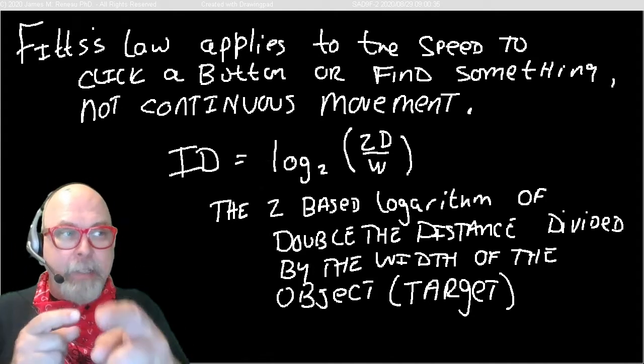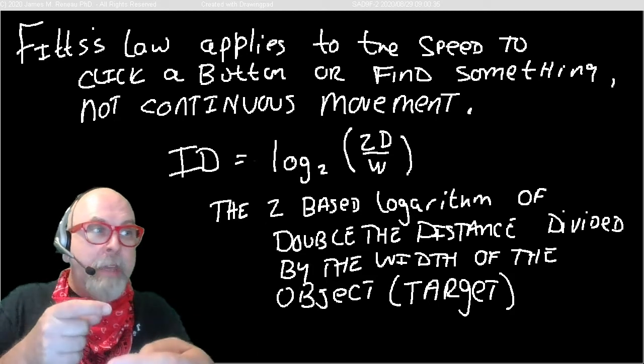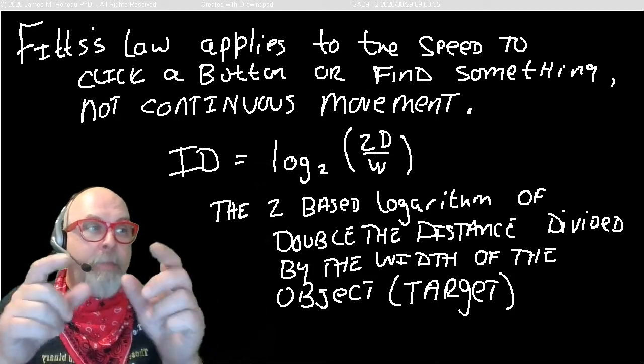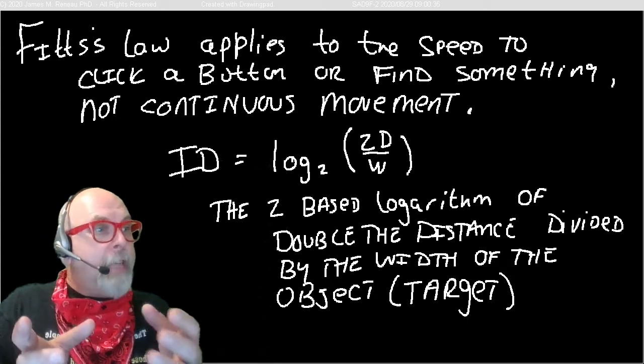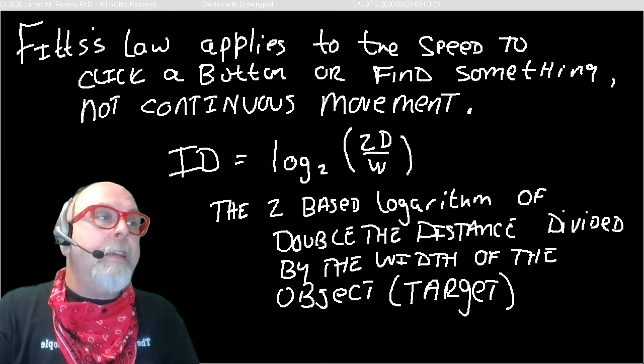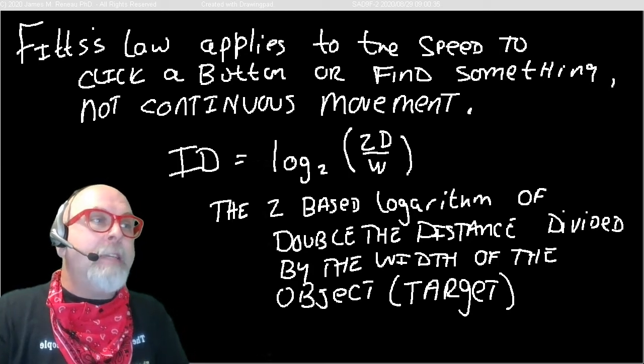So, we take whatever the distance is in units, inches, meters, millimeters, feet, whatever, and we divide it by the width of the object in the same unit, inches, feet, whatever, and we then calculate the logarithm base 2.